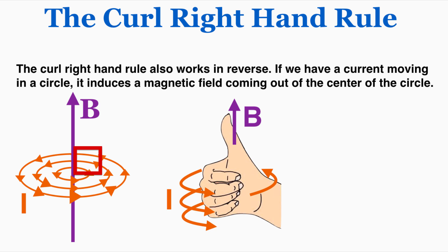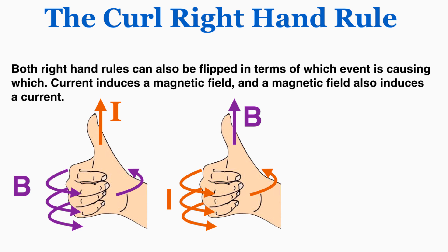The curl right-hand rule also works in reverse. If we have a current moving in a circle, it induces a magnetic field coming out of the center of the circle that follows the direction of our thumb. Both right-hand rules can also be flipped in terms of which event is causing which — current induces a magnetic field, and a magnetic field also induces a current.